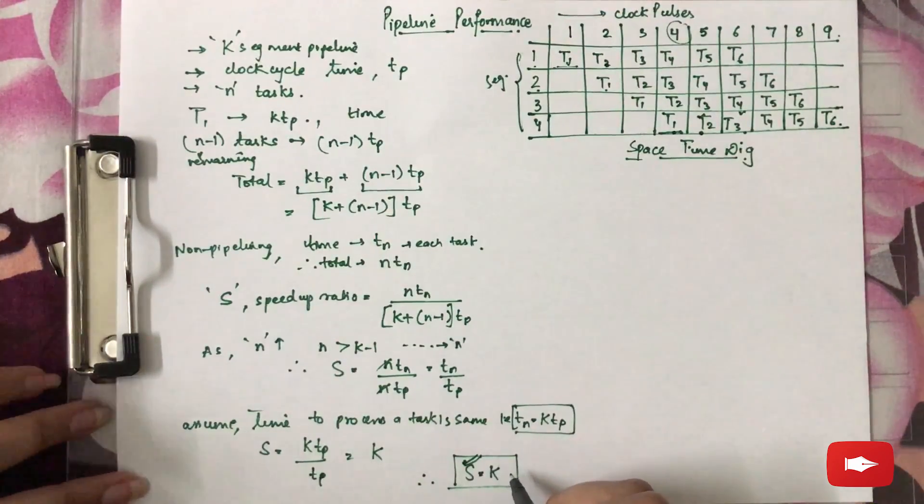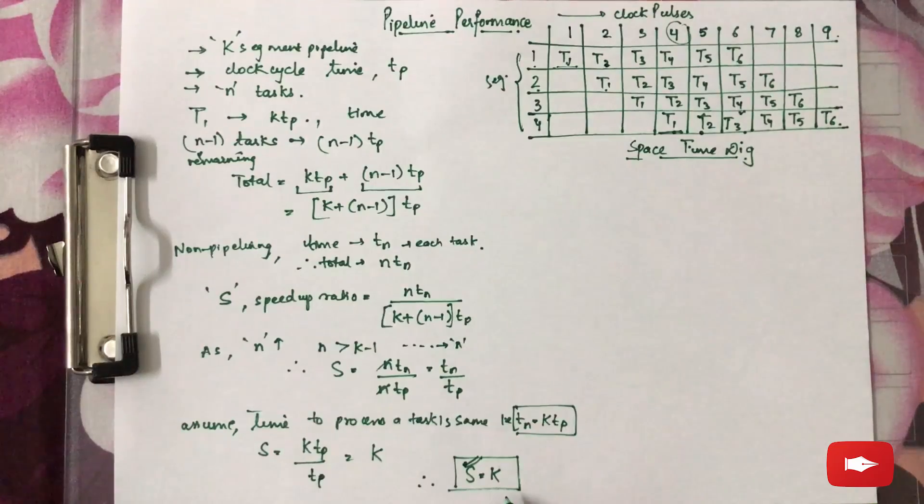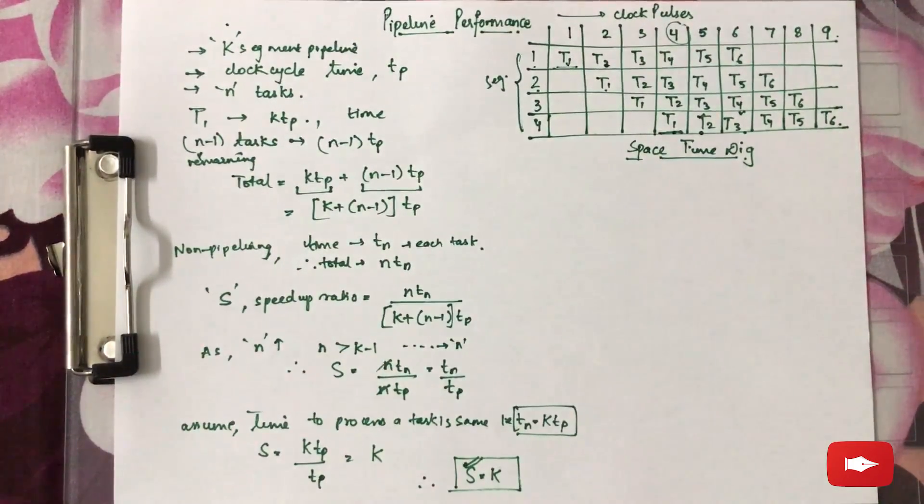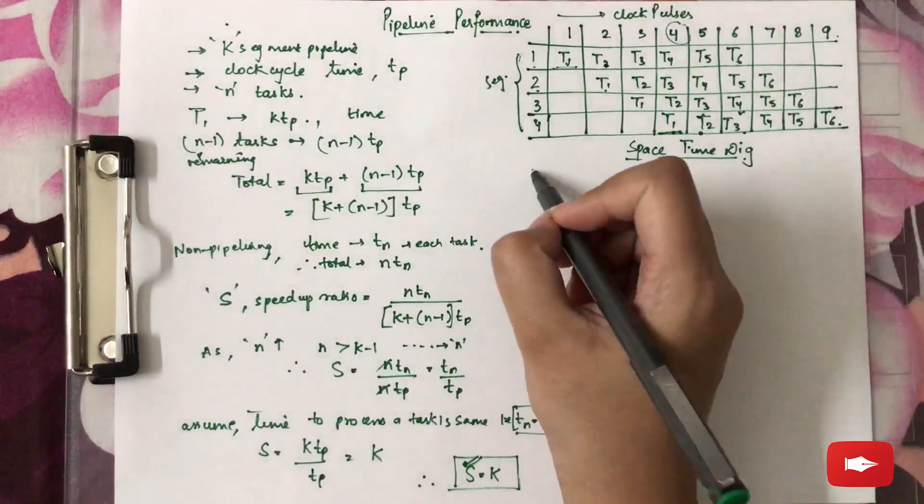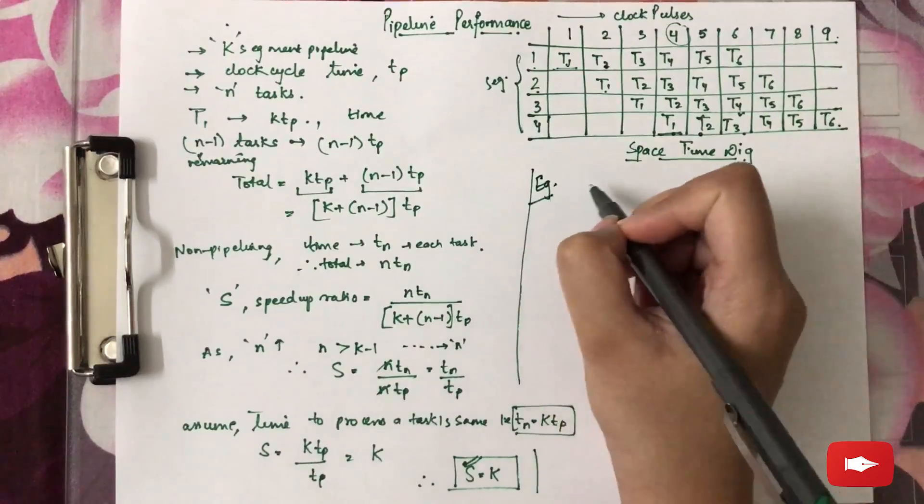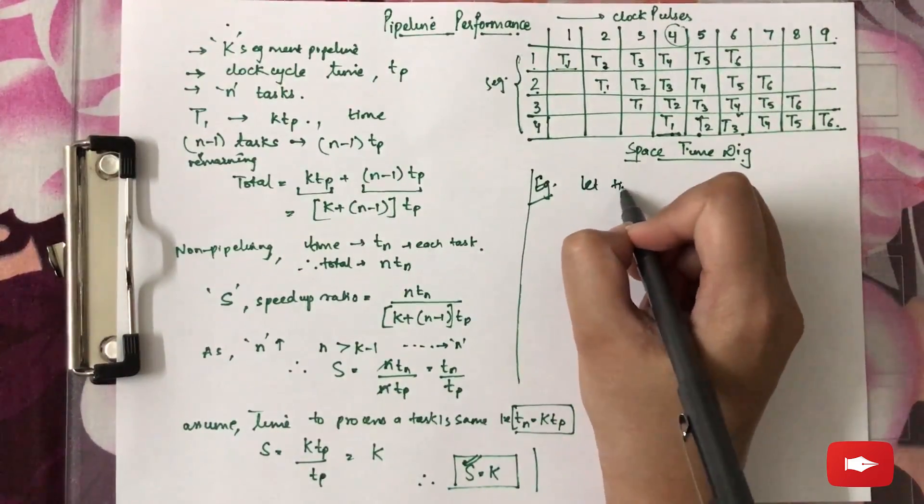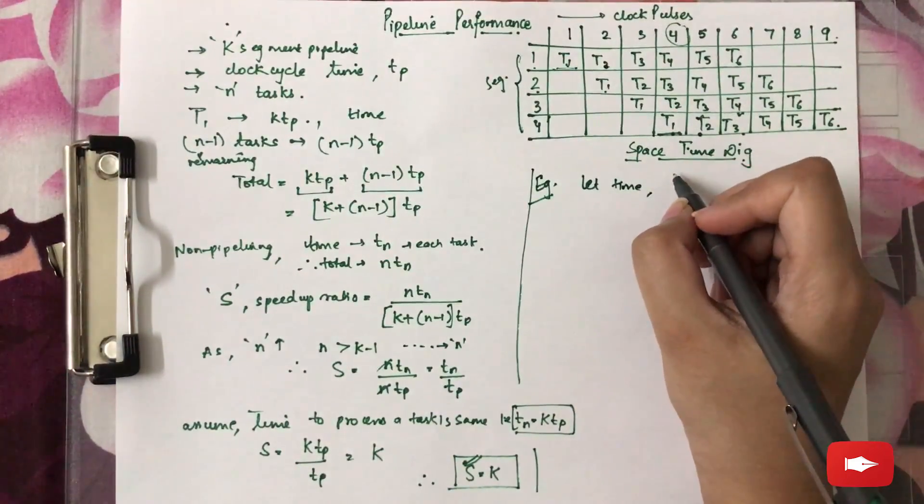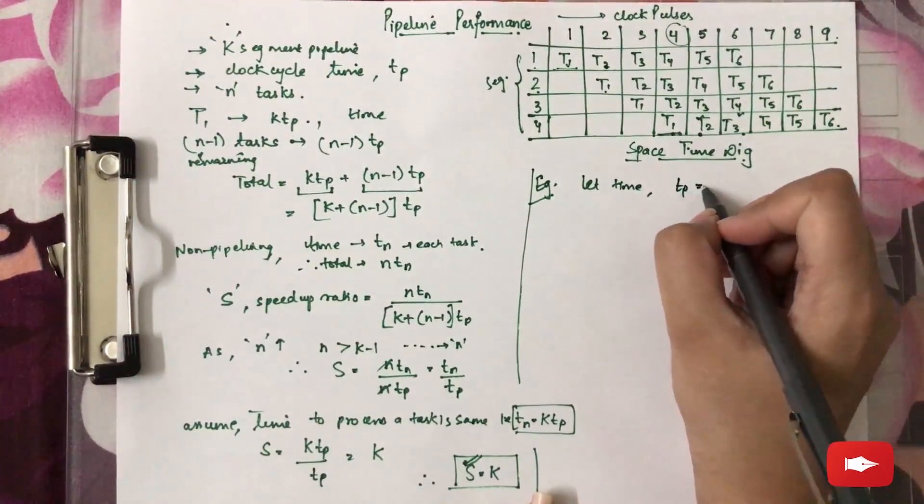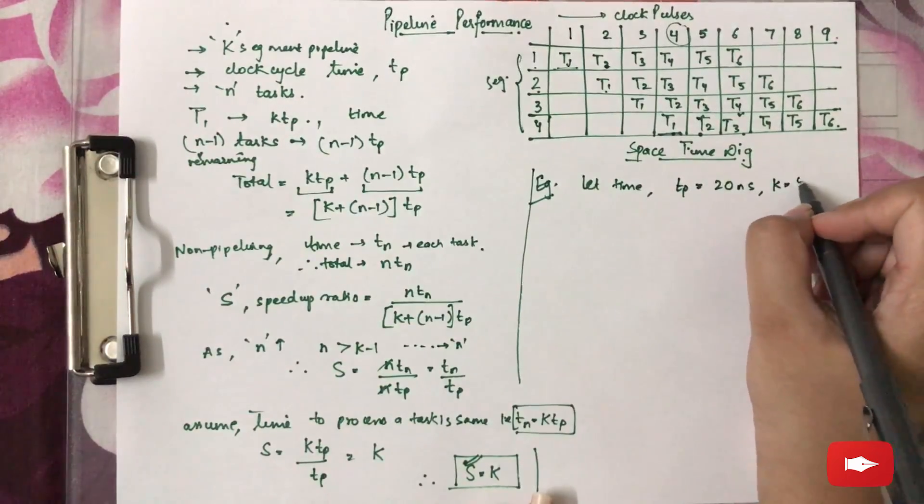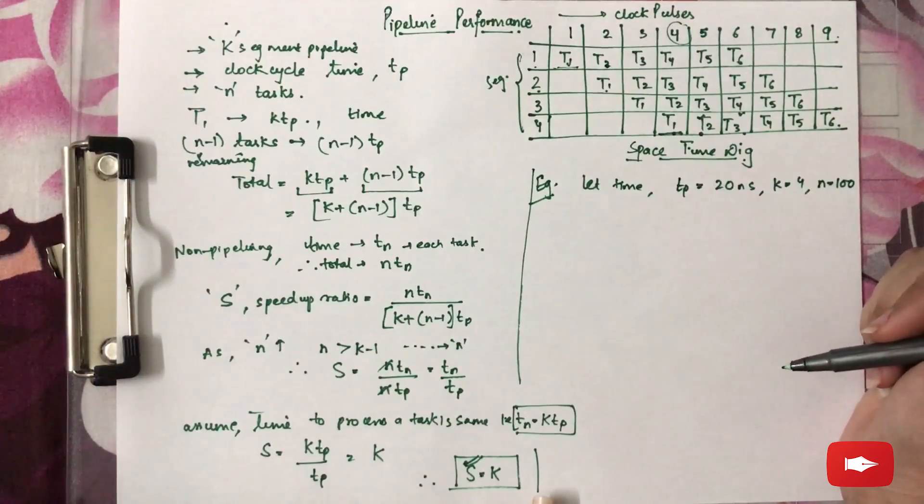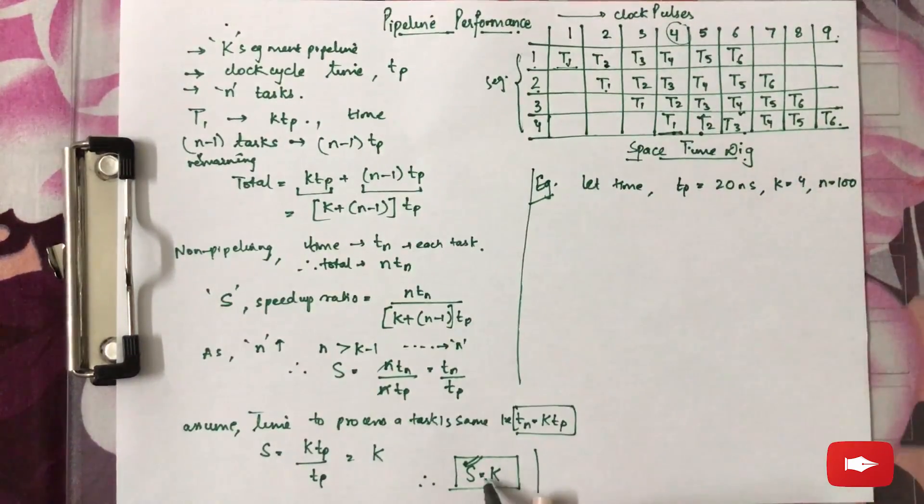Speed-up ratio will be equal to the number of segments. Let us illustrate using an example. Let the time to process a sub-operation using pipelining, that is TP, be 20 nanoseconds, K equals 4, and N equals 100. Now we need to find the value of speed-up ratio, that is capital S.